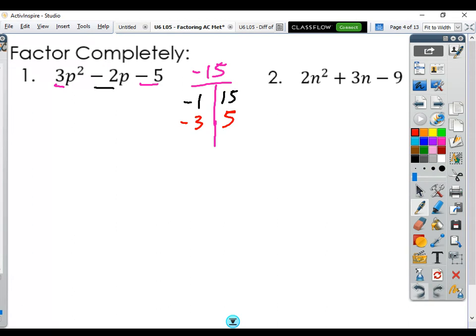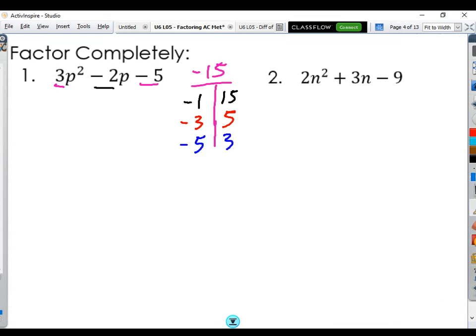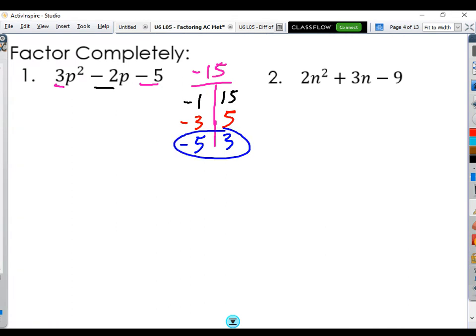So if we're close, if we're really close, we want a negative 2, then all we have to do is switch the signs. Negative 5 and positive 3. This is the one we want. That one's going to add up to a negative 2 when we add them together.